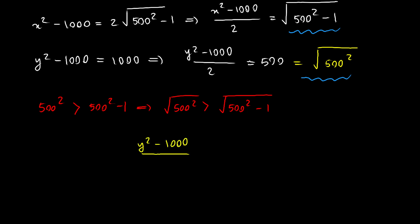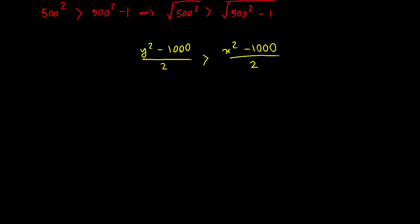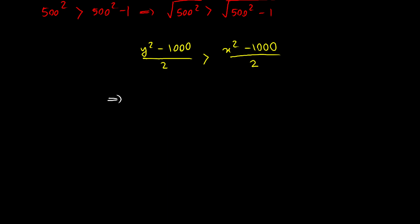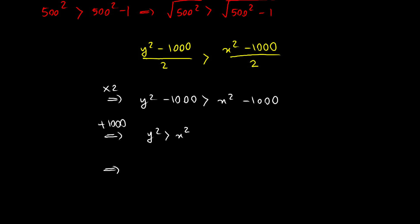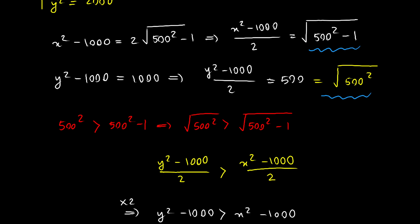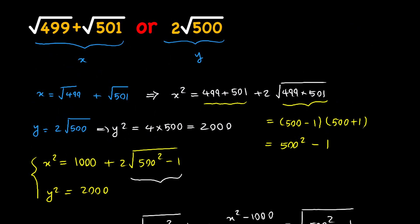We can say that y squared minus 1000 divided by two is greater than x squared minus 1000 divided by two. Multiplying both sides by two gives y squared minus 1000 is greater than x squared minus 1000. Adding 1000 to both sides gives y squared is greater than x squared, or equivalently y squared minus x squared is greater than zero. Factoring as a difference of two squares gives y minus x times y plus x greater than zero.